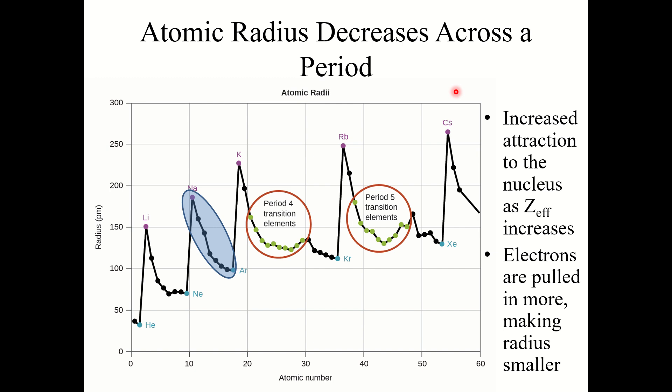Why does atomic radius decrease going left to right? As you go left to right across a period, effective nuclear charge increases because you're not increasing the number of core electrons — so shielding doesn't increase — but you are increasing the number of protons. So the electrons are pulled in closer to the nucleus, making the radius smaller. Going left to right across a period, atomic radius decreases because effective nuclear charge is increasing.